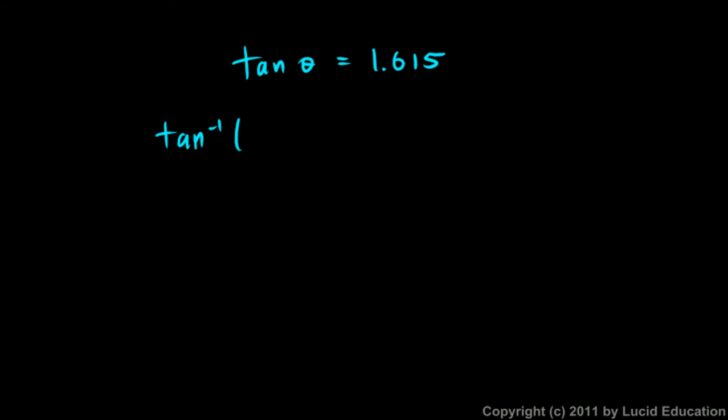One thing you should definitely remember is the basic algebraic fact that you can always do the same thing to each side. In this case, I've taken the inverse tangent of each side, and you should recognize that the inverse tangent and the tangent cancel each other out, just like squaring something and square rooting something.